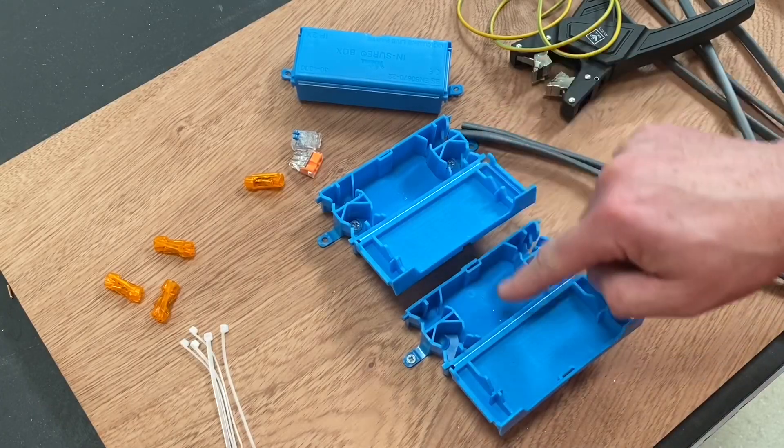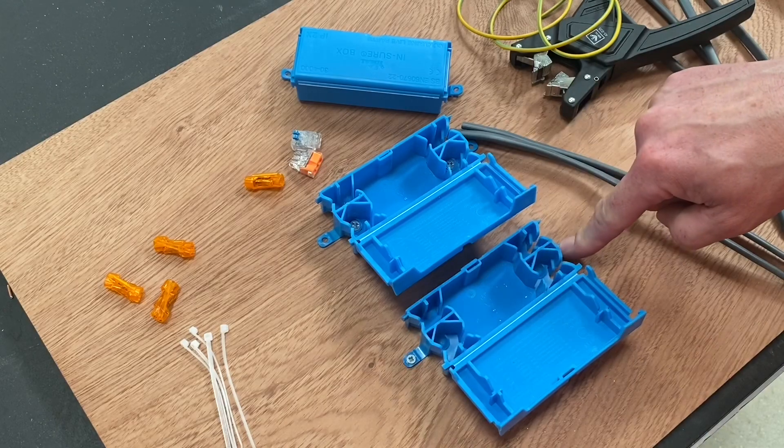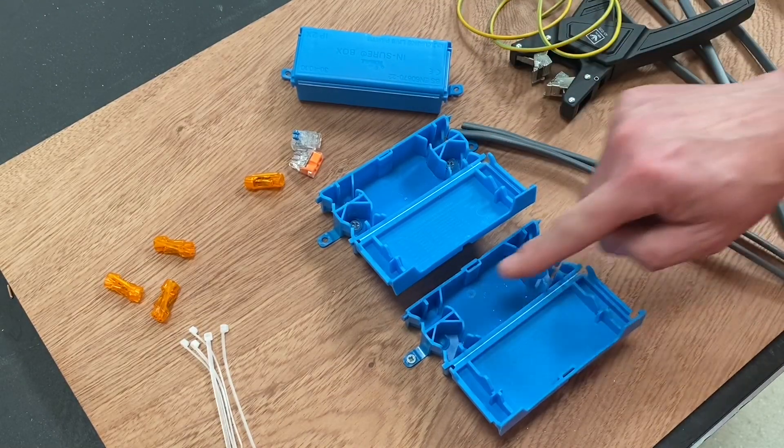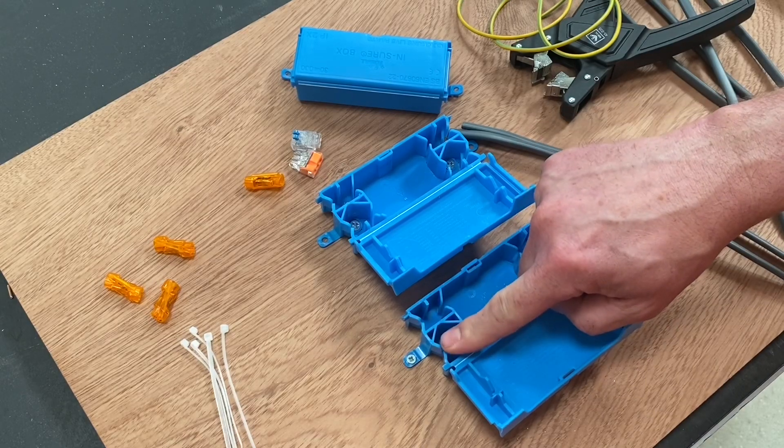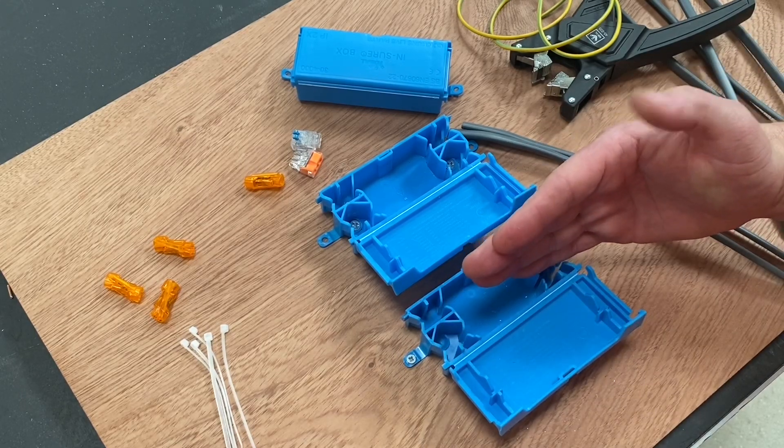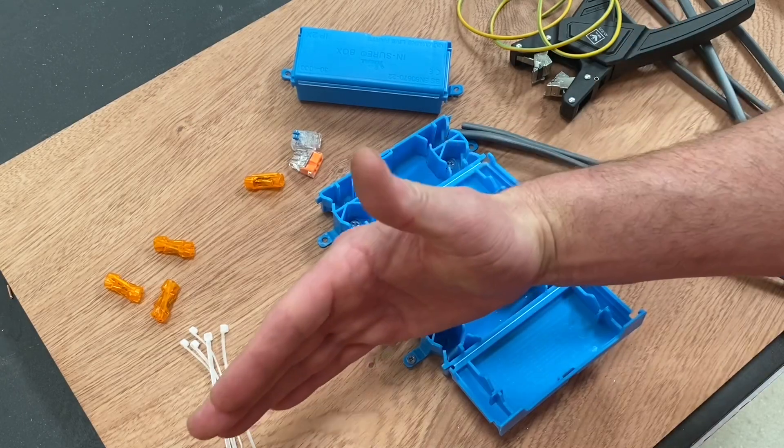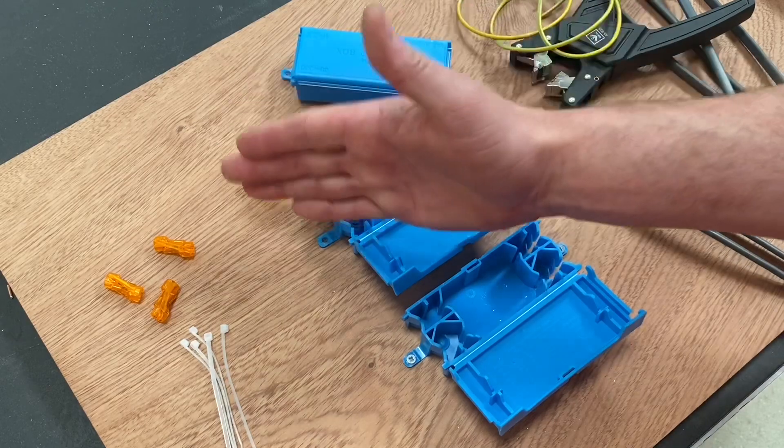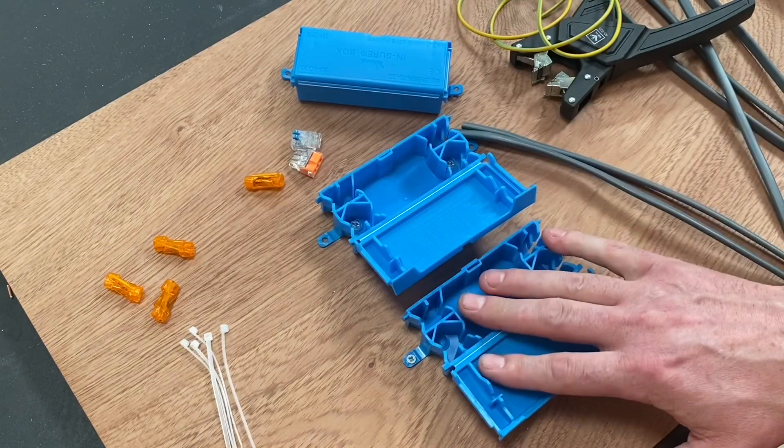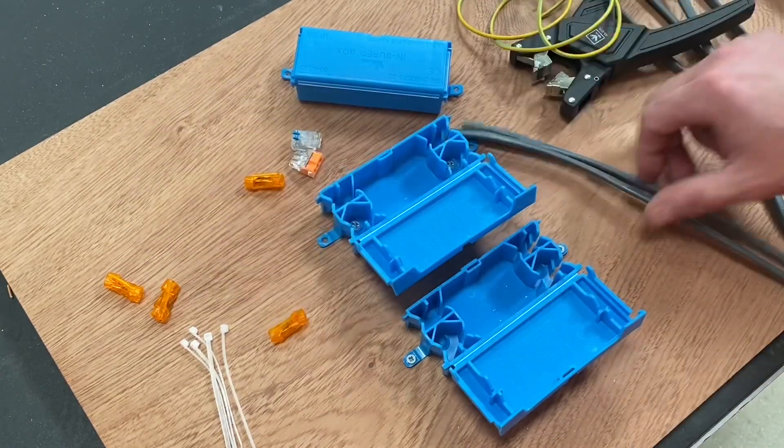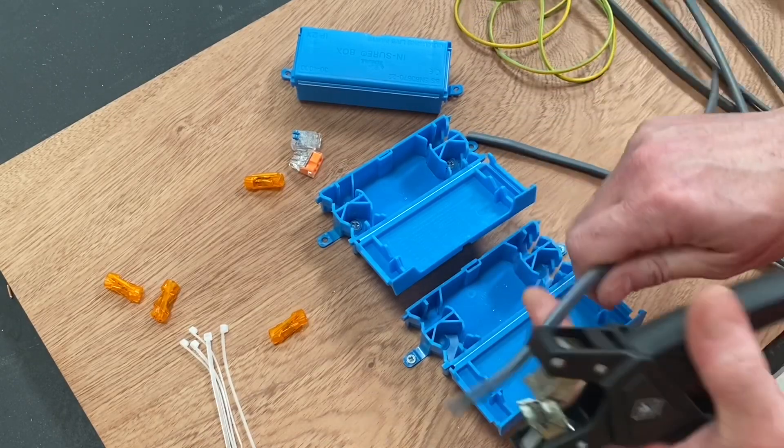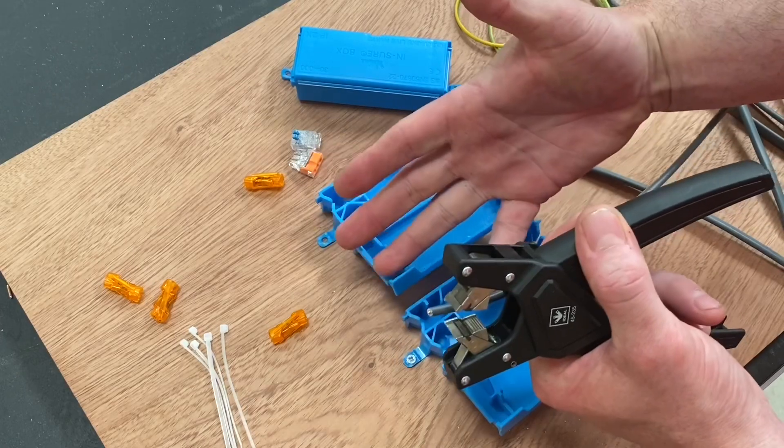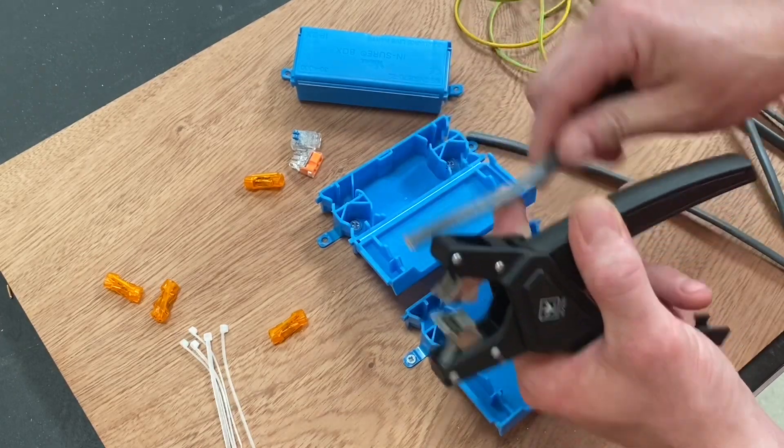So I've screwed down two In-Sure boxes, and I've used the outside fixings on this one and the internal fixings on this one. We've got four positions which we can bring cables in on. What we're going to do in the first instance is join a 1 millimeter squared cable as if you're extending a lighting circuit. So we'll start with this one here. I'm going to use the splices for this connection. As always, you need to make off your cables before putting them into the cord grip. So we're going to make all our connections external to the box and then push them into the box and close it up.